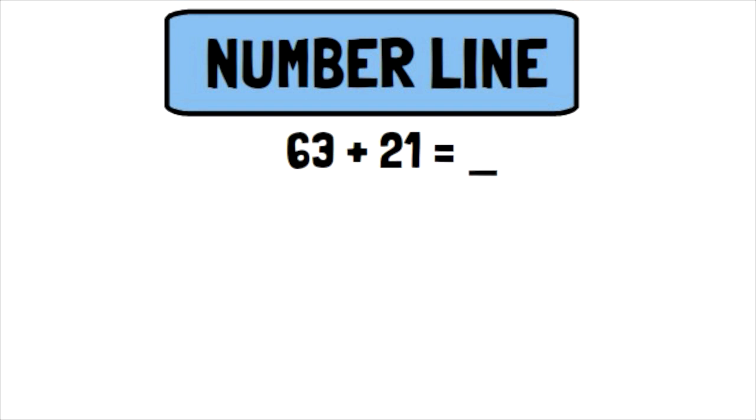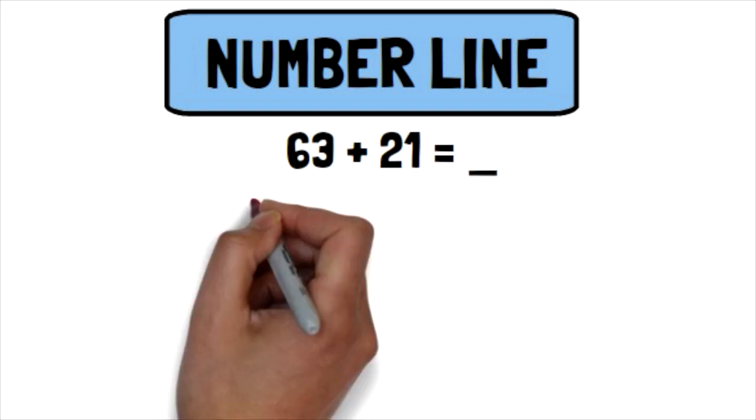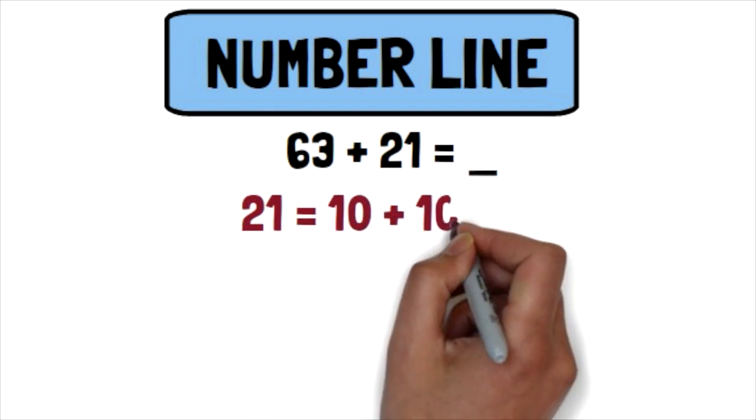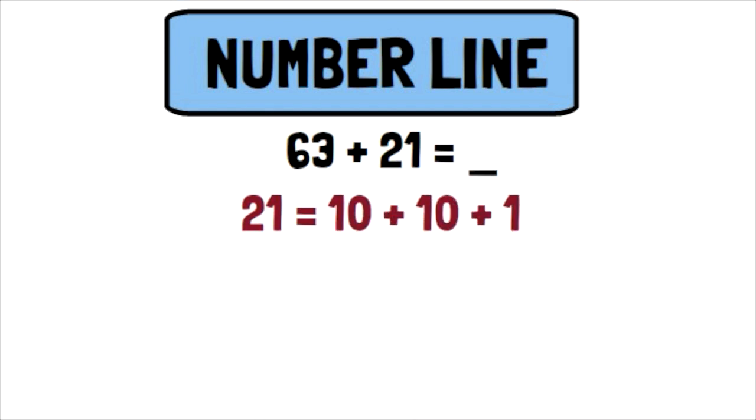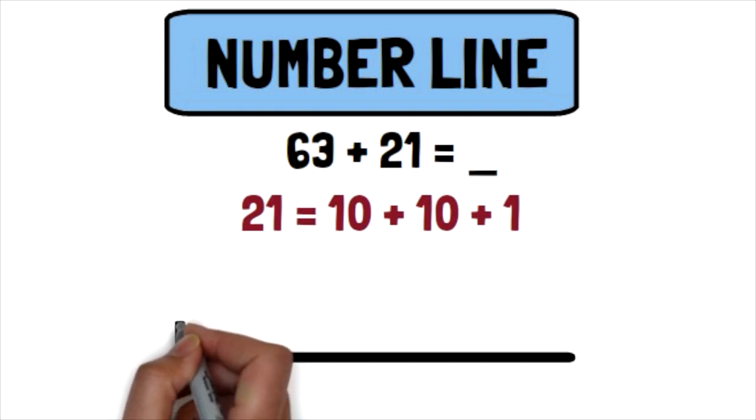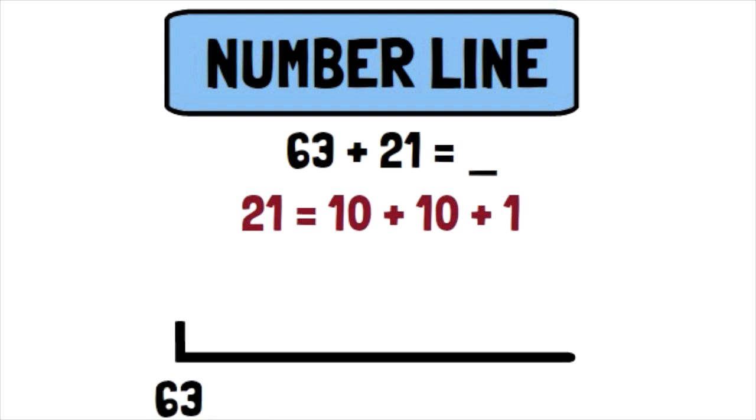So taking that equation 63 plus 21 again, you would have your child start with the larger number, so start with 63, and put that on the end of the number line. Then you would ask them how many tens are in 21. And again, hopefully they would say 2. So you would break that equation into 21 equals 10 plus 10 plus 1. From there, you would have your child draw out a line to show a section of 10 that they would be adding to 63.